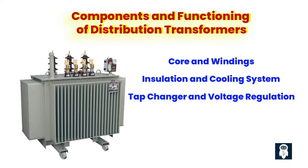A transformer is a complex electrical device that consists of several essential components working together to facilitate the transformation of voltage levels. The primary components include the core and windings. Just like a human body has a skeletal system, distribution transformers have a core and windings that make up their internal structure. The core is typically made of laminations of electrical grade steel, providing a path for the magnetic flux generated by the transformer. The windings consist of copper or aluminum conductors coiled around the core, which help in the transformation of voltage.